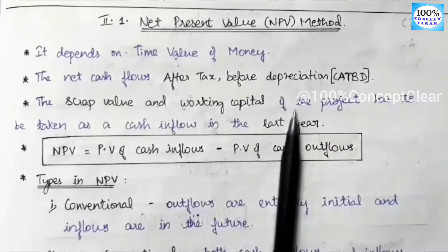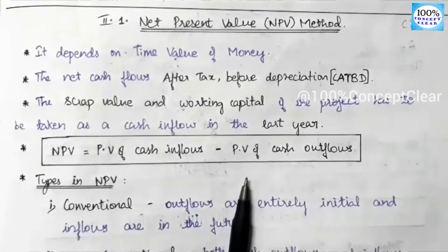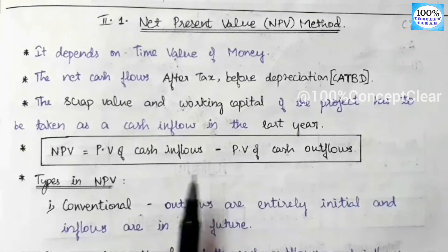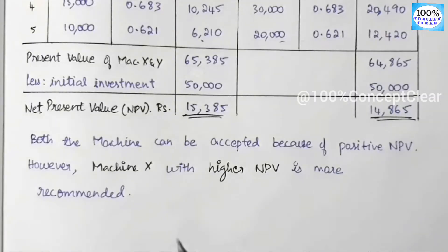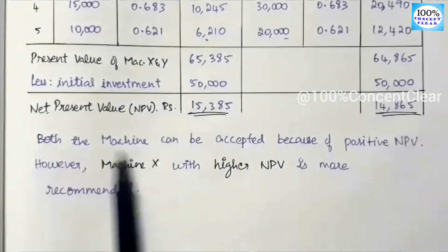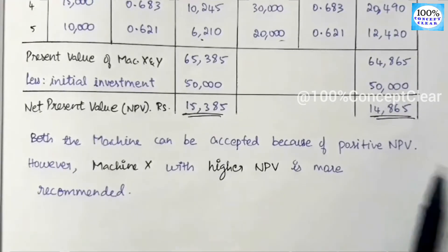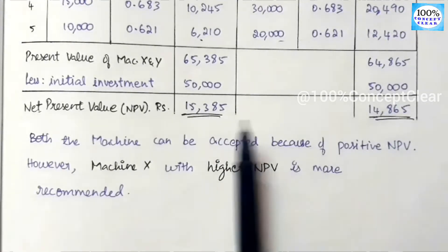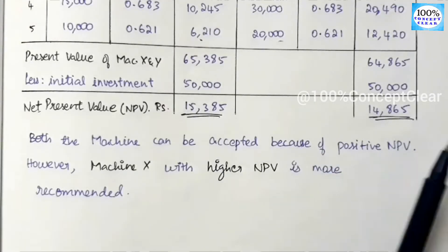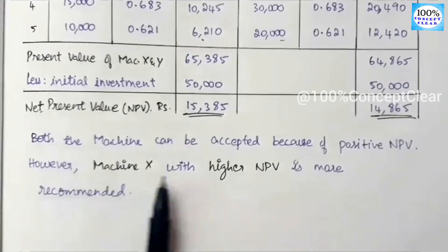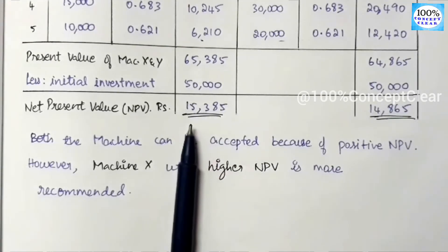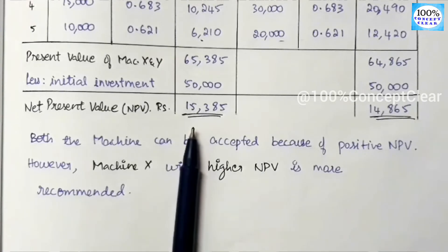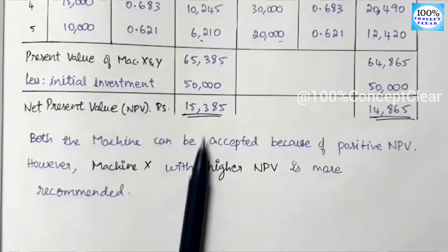If you want a detailed explanation for the net present value method, there is a link in the description — check the capital budgeting playlist and the net present value topic. Both projects can be accepted because of positive NPV, but machine X with the higher NPV of 15,385 is more recommended.